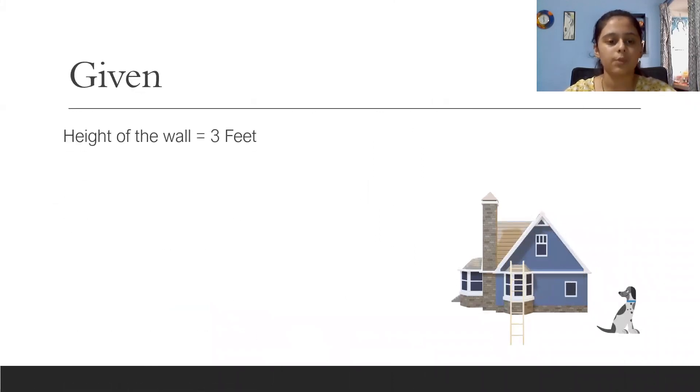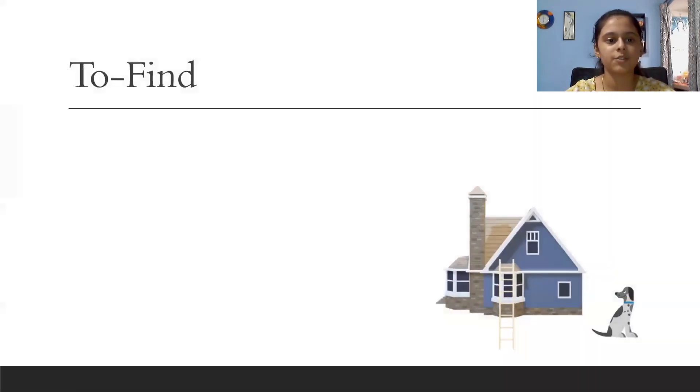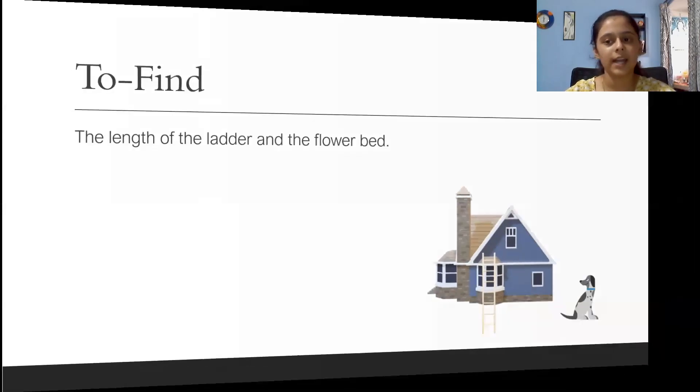Height of the wall equals three feet. The length of Emma's dog's each step is one foot. Emma's dog can walk four steps. We need to find the length of the ladder and the flower bed.